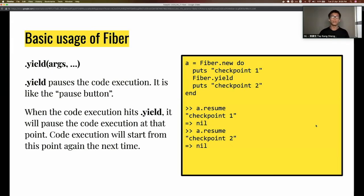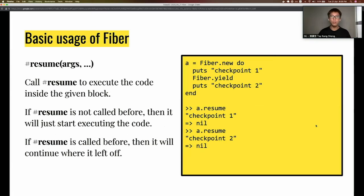The yield method is the pause button - it pauses the code execution. When the execution hits yield, it will pause at that exact point. The next time you resume this Fiber, it will run from this yield method downwards again.